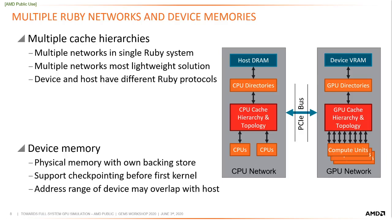The first new feature to address is supporting a device with its own cache hierarchy and memory. This will be the largest device added to GEM5 to date, so there is some support missing to enable this. As an example topology, we would like to model what is shown on the right on this slide. The key challenges are allowing for multiple Ruby protocols for the CPU and GPU device, and allowing the GPU to have its own device memory. CPU and GPU coherence protocols are typically very different, and therefore we want to accurately model both CPU and GPU protocols.